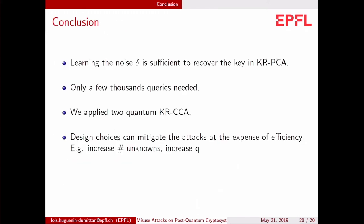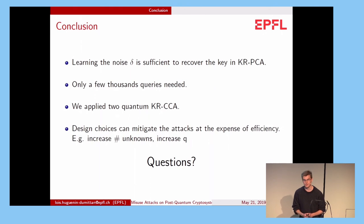So let me conclude. We've seen that learning the noise delta is sufficient to recover the key in this key reuse plaintext checking attack model. That only a few thousand queries are needed to do so. We also applied two quantum key or CCA attacks. And we've seen that with one or two quantum oracle calls, we can recover the secret key with a non-negligible probability. And finally, some design choices can mitigate the attacks, but at the expense of efficiency. For example, we can increase the number of unknowns, or we can increase the value Q, or we can maybe use some error-correcting codes as in Lepton, and it mitigates the quantum attacks, at least the quantum attacks we consider. So that's all for me.